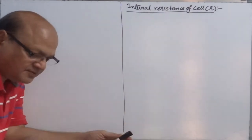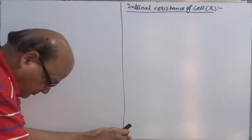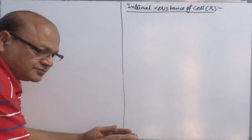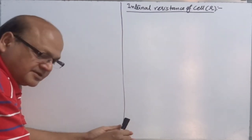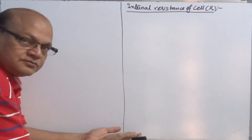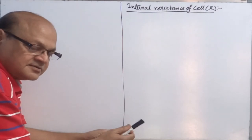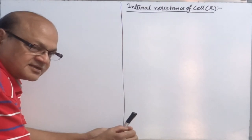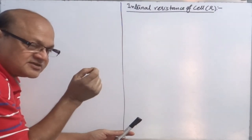When you draw a current from any cell or battery, in the external circuit, current flows from positive terminal to negative terminal. Does it mean when current reaches the negative terminal, it terminates? It does not. Current always flows through a circuit when the circuit is closed.